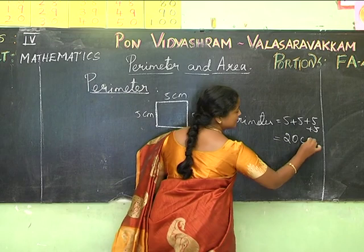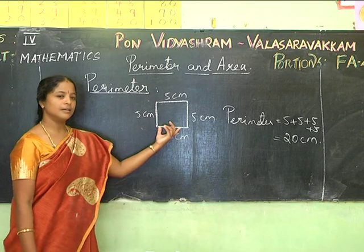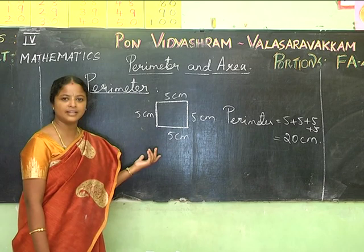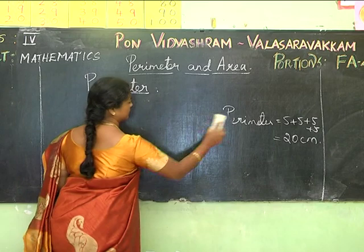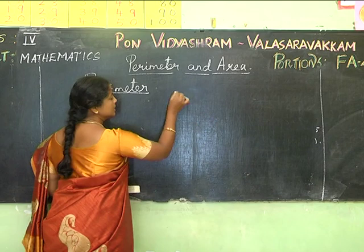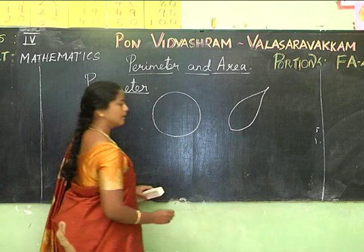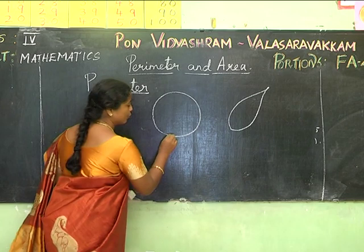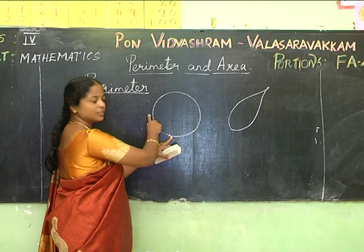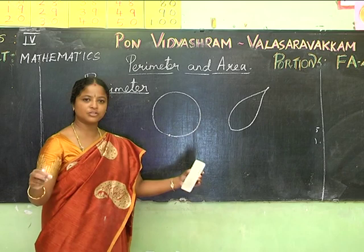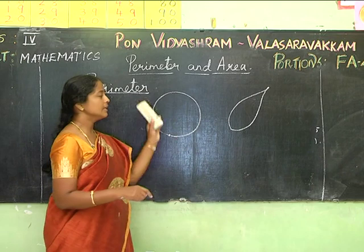If I have irregular shapes, how will I find the perimeter? For example, for a circle, I will take a string, place it along the boundary of the circle from the starting point all the way around back to the end point, then lay the string on the ruler to measure it. That gives me the perimeter.